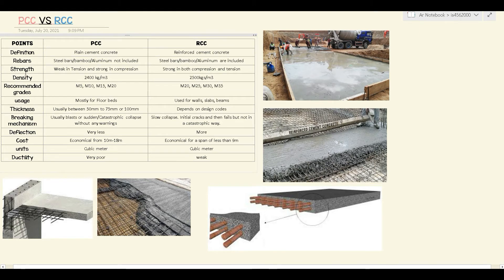The third point is strength. In the case of PCC, it is weak in tension and strong in compression, because concrete is strong in compression and weak in tension. That's why we add steel bars, which is what makes it RCC — reinforced. In the case of RCC, it is strong in both compression and tension, because it has both concrete and steel bars.